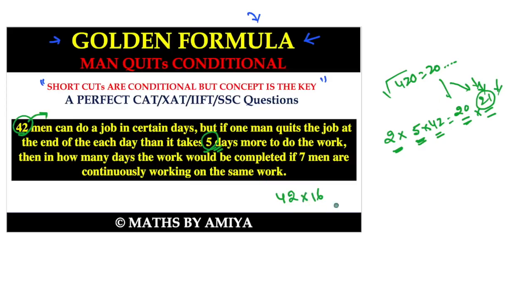So 42 men take 16 days. Now if we need to find how long 7 men take: using man × time = work done, we get 42 × 16 = 7 × t, so t = 96 days. This calculation hardly takes 5 to 10 seconds once you remember the formula.